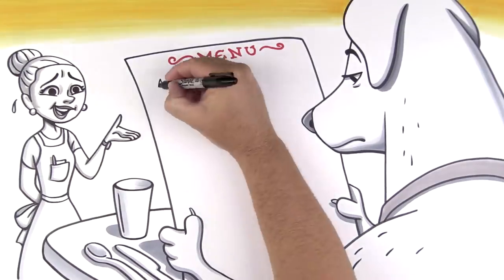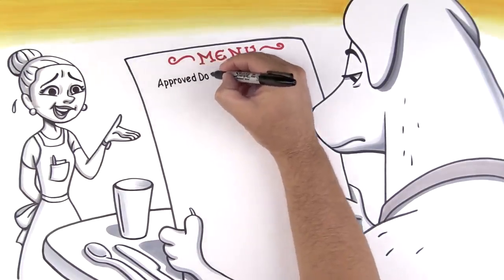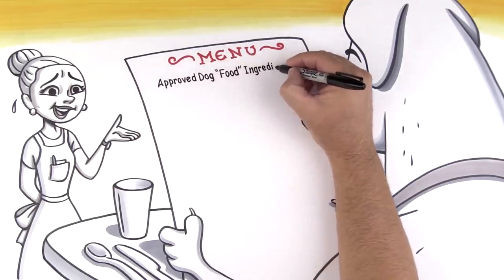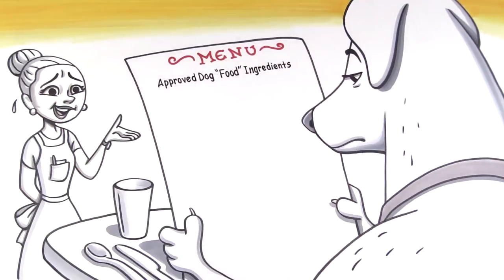Well, here's a list of ingredients that would never be allowed in human food, but are completely legal and approved by the AAFCO for dog food. Wasted slaughterhouse organs, heads, hooves, beaks, and feet.